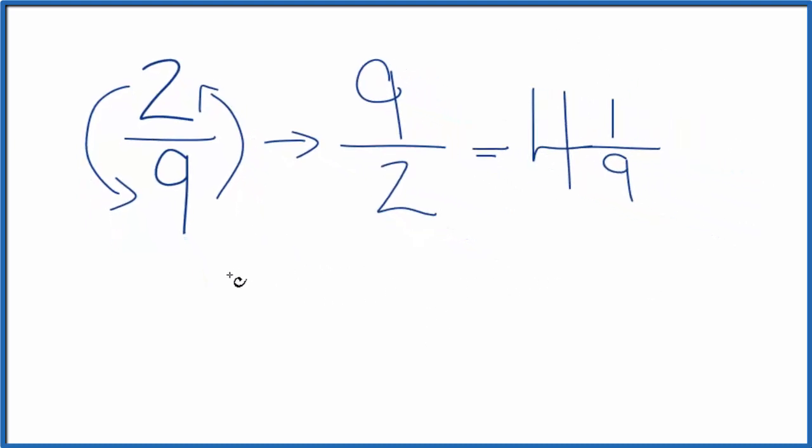Let's check our work, though. Two ninths, that's the original fraction. We're going to multiply that times its reciprocal. If we did this correctly, we should end up with one.